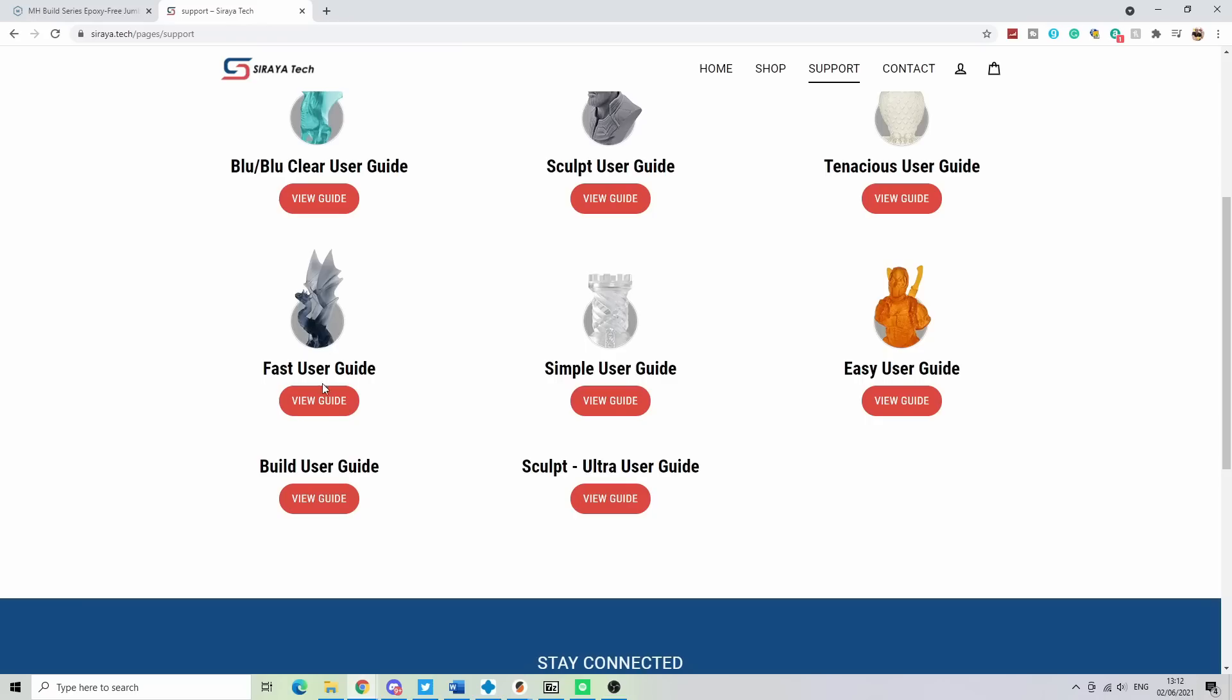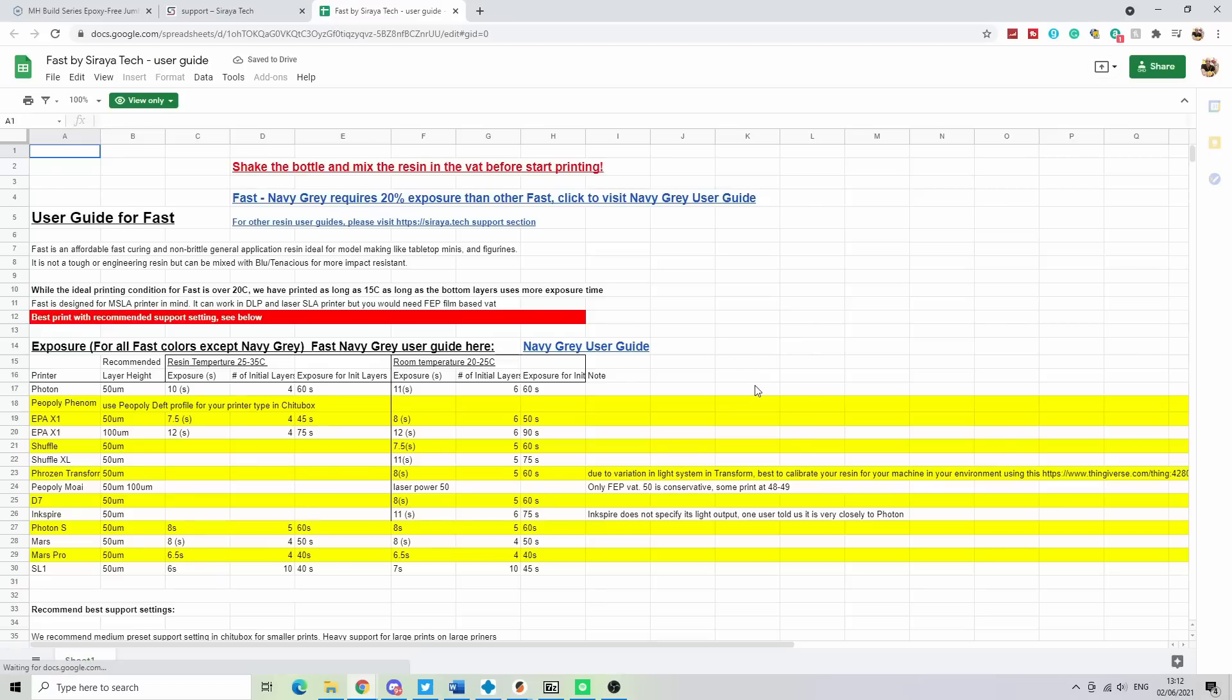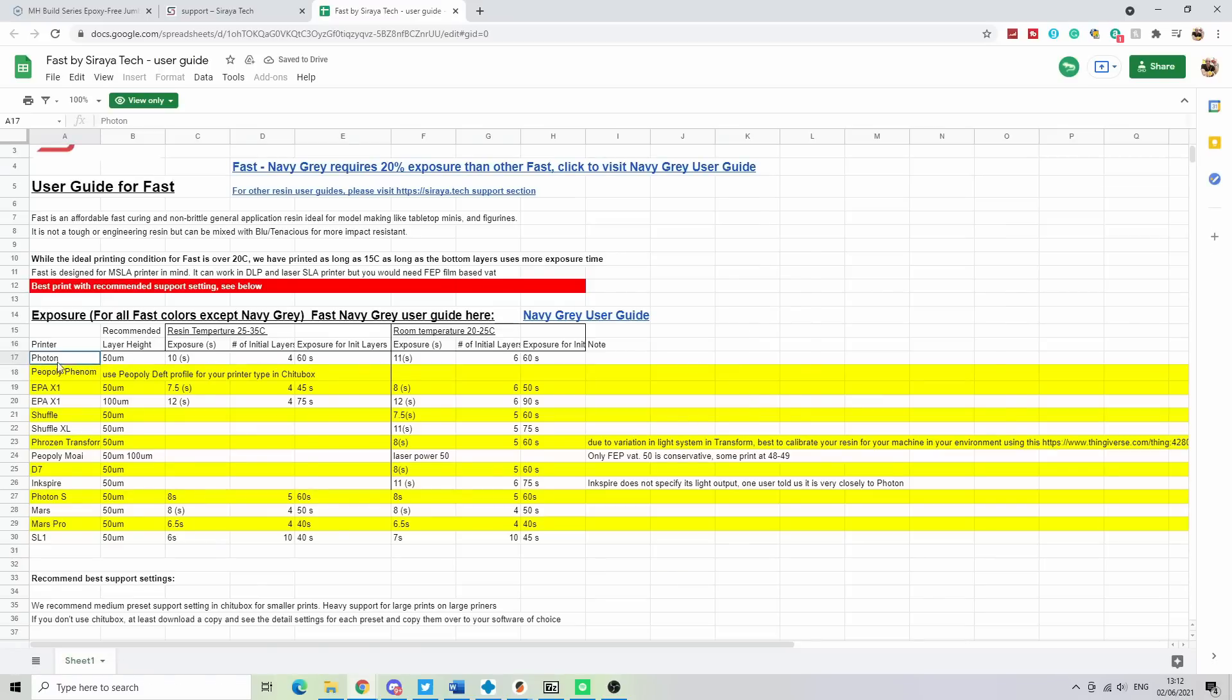Siraya Tech have a great repository of printing specs for all their resins, but sometimes a printer comes out which they still don't have the official numbers for yet, which is understandable. And even so, as you'll see in this video, these numbers might still need some tweaking for your environment. It's even specified by Siraya Tech themselves.